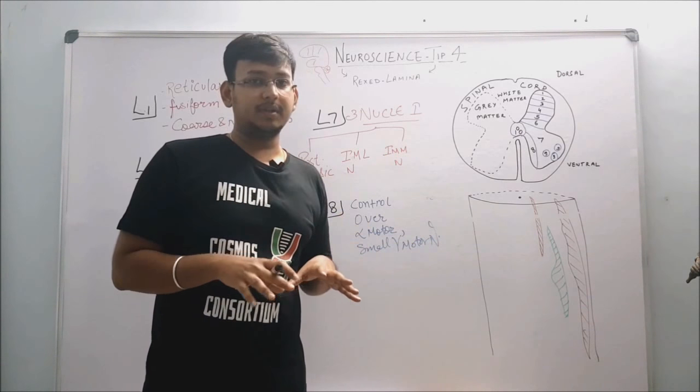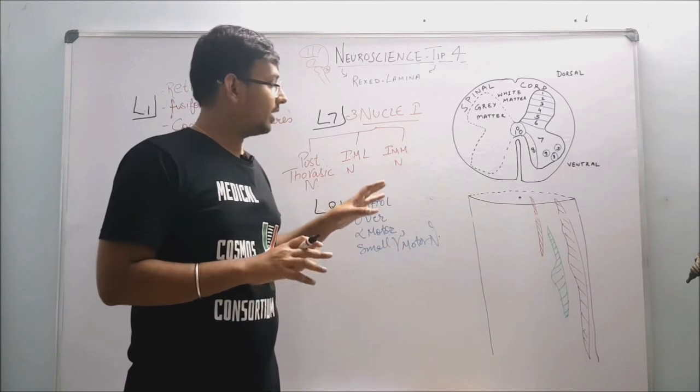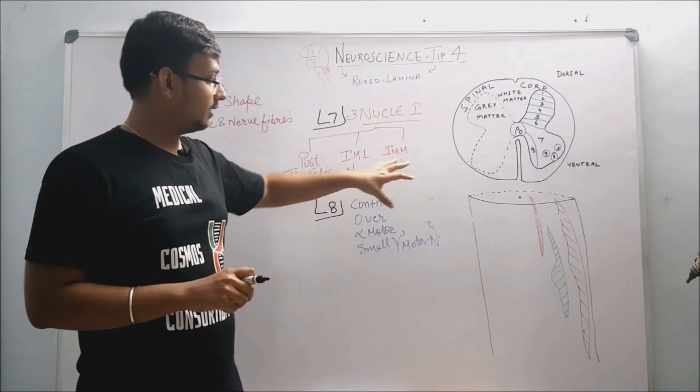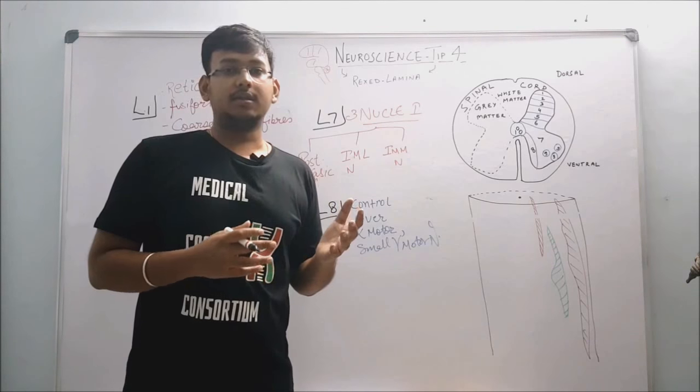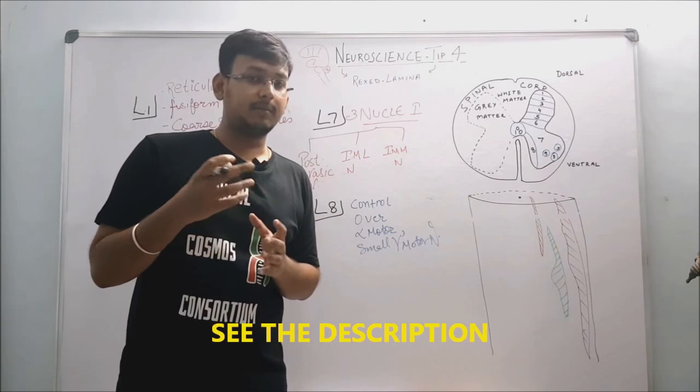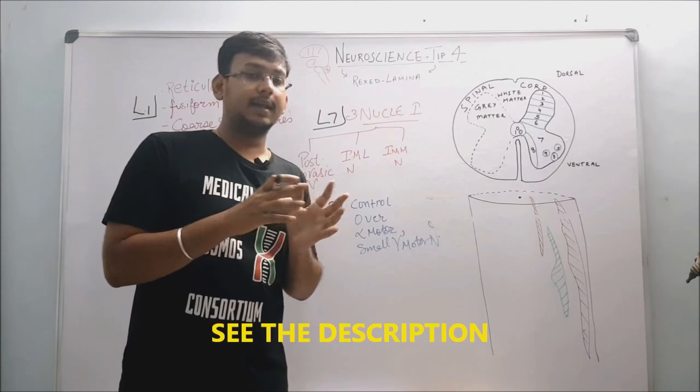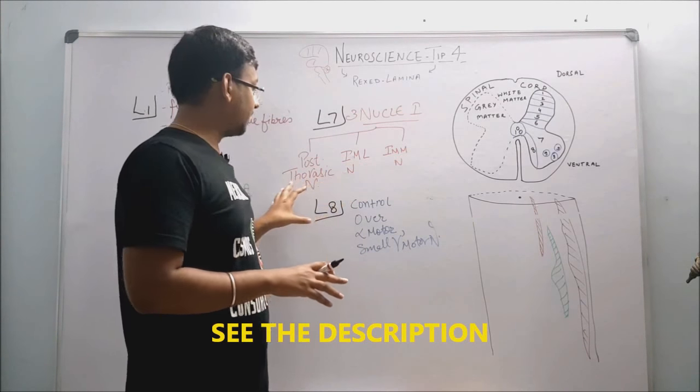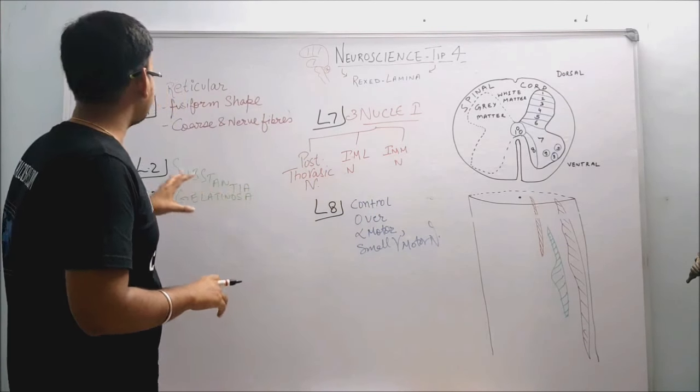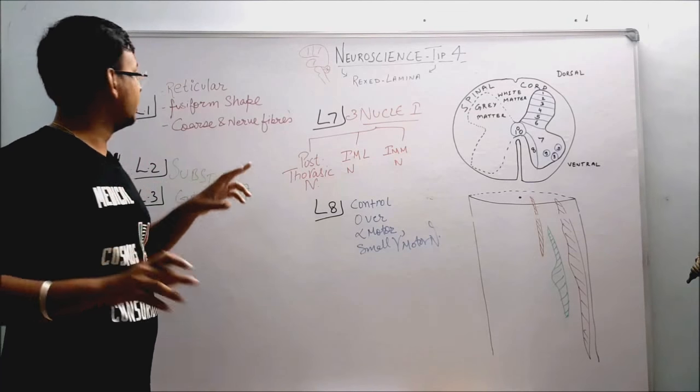For example, in my other video, I have already discussed about the development of the nucleus system in spinal cord. You can see that link in the description part. Now coming back to the lamina description: for example, in lamina 1, we see the reticular and fusiform-shaped cores and nerve fibers.